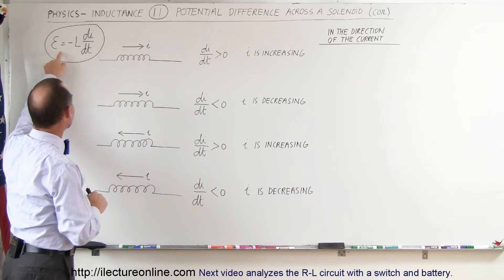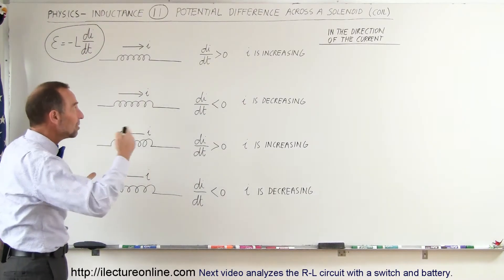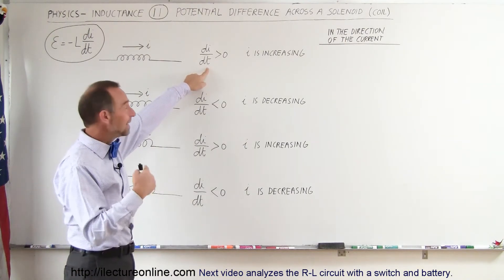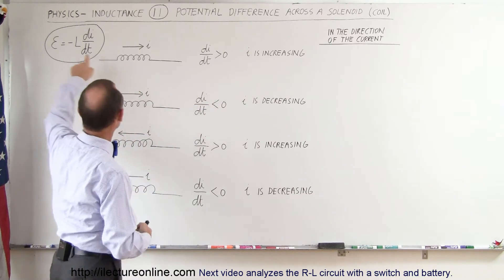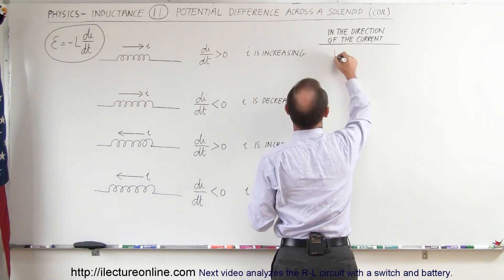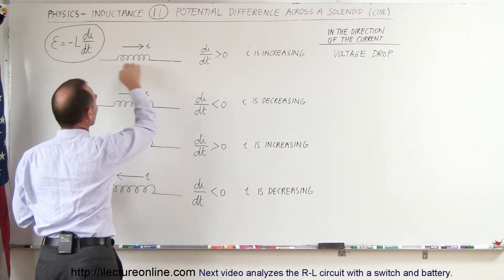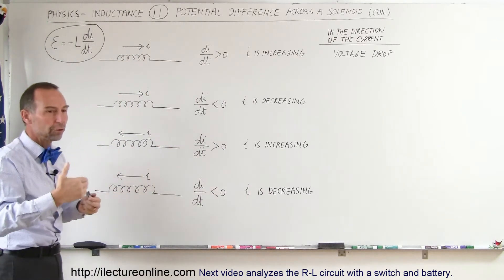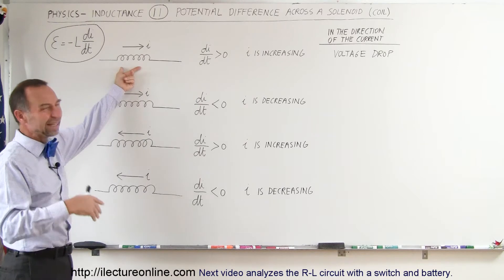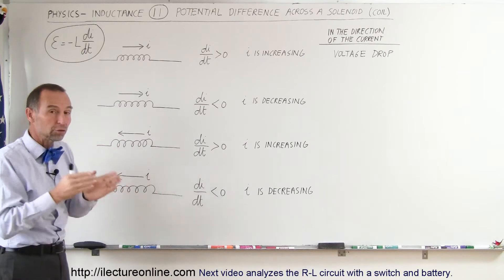then we can say the potential difference across it is negative if the change in the current is positive — that is, the current is increasing. So in this case, going from left to right, the current is increasing, dI/dt is positive, therefore the potential difference or voltage across it should be negative. It's a voltage drop. That means there's a higher potential on the entry side and a lower potential on the exit side. It's kind of like what happens with a resistor — if the current flows from left to right through a resistor, it opposes the current, while inductors only oppose the change in the current.